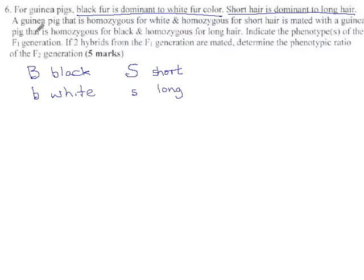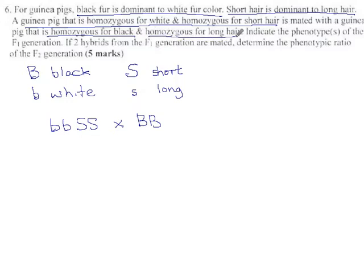So one parent is a guinea pig that's homozygous for white and homozygous for short. We know exactly what their genotype is. Homozygous white and homozygous short is crossed with a guinea pig who is homozygous for black, big B, big B, and homozygous for long, little s, little s.